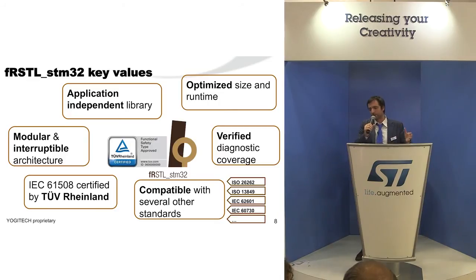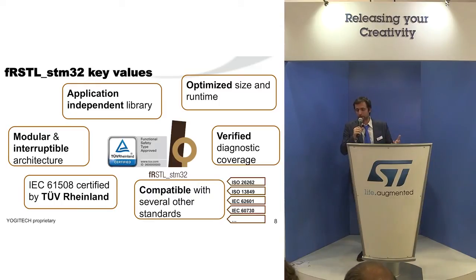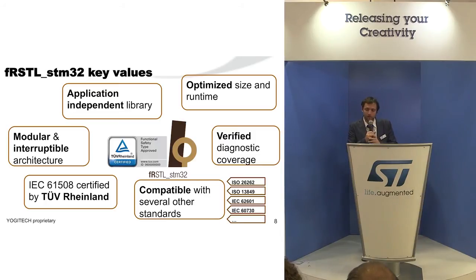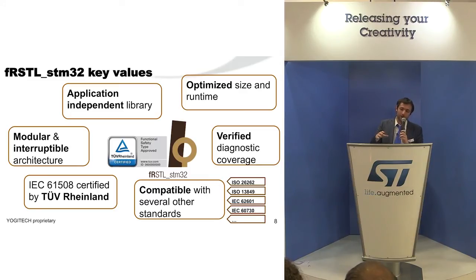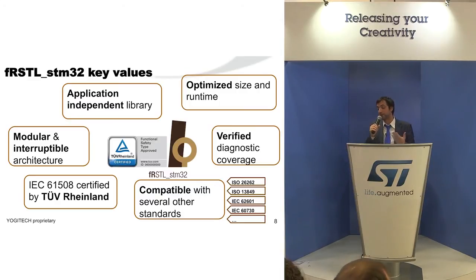The design is modular, so you can run the library all at once and test everything in one go, or you can split the tests into small chunks if you need to — for example, if you need to keep interrupts enabled. For the RAM test in particular, the test is organized into slices, so you can test all of the RAM at once or divide it into slices. It's up to you how much RAM you want to test in one go, providing flexibility to the library.